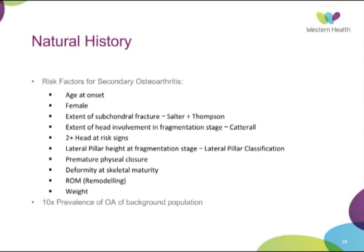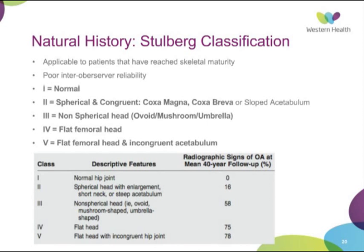The overall prevalence of osteoarthritis is about 10 times the general population. The largest series regarding natural history is the Stulberg series, which looked at patients' radiographic signs of osteoarthritis at 40 years of follow-up. All children should be followed to skeletal maturity. Once you're getting into Stulberg grades three, four, and five, the prognosis is much worse — over half will have significant radiographic arthritis at 40 years post-Perthes, caused by a non-spherical head in an incongruent joint.